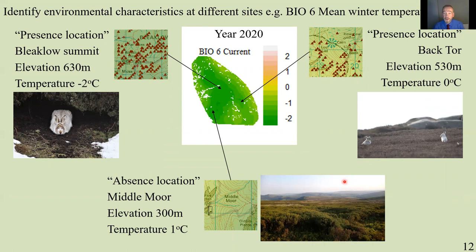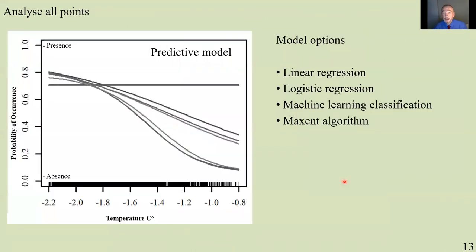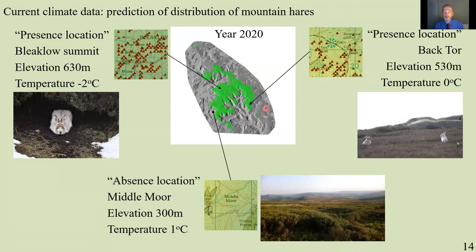We now have presence and absence data with environmental characteristics. We feed this into a predictive model — a logistic regression. This shows on the x-axis that when you have minus two degrees, there is a high probability on the y-axis of a mountain hare appearing. When it's warmer, towards zero degrees, the probability of a mountain hare occurring is much lower. We have several lines because we've run the model several times with different selections of absence data. This predictive model shows that in the Peak District, mountain hares range over 160 square kilometers — that's for the year 2020.